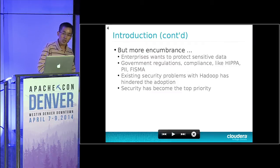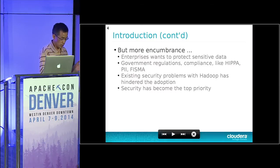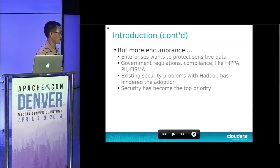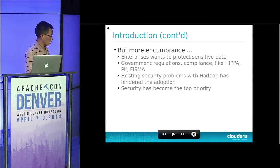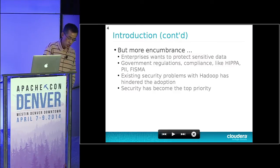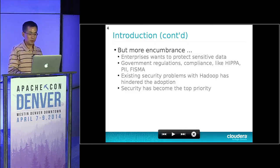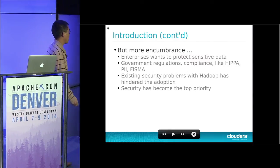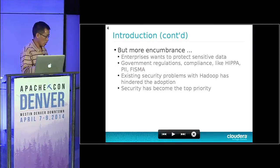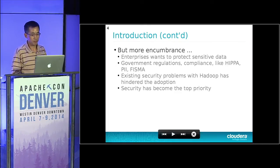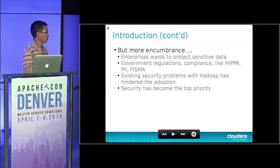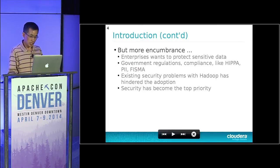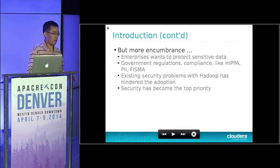But there are problems as well. After enterprises put sensitive data on the cluster, they want to protect it — not every user should have access to every piece of data. At the same time, there are regulations and governance rules that require certain security measures. Examples include compliance requirements such as HIPAA, PCI, PII, and FISMA. Enterprises have the responsibility to comply with these rules. We know that Hadoop was not started with security as a top priority, but now with greater adoption, security has become the top priority for many components in the Hadoop ecosystem.